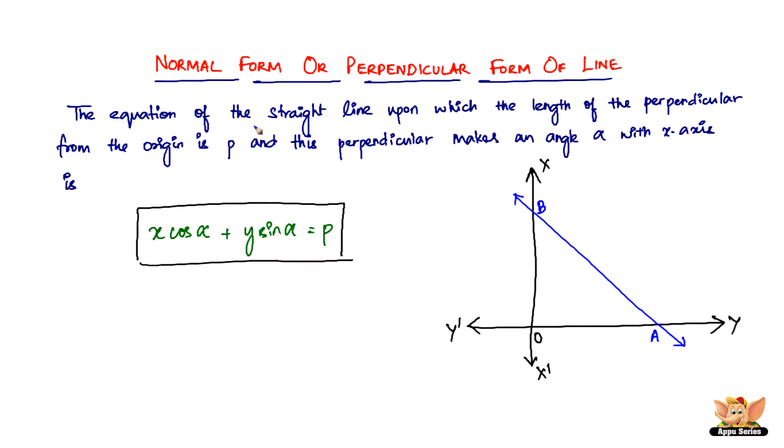And then we also spoke about the equation of the straight line. The straight line in question is AB upon which the length of the perpendicular from the origin—so the origin is here—the length of the perpendicular from the origin. Perpendicular to what? Perpendicular to the straight line in question. From where? From the origin. So this is how it's going to be.